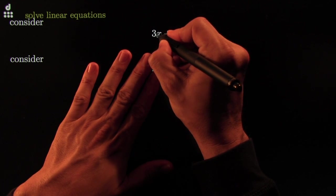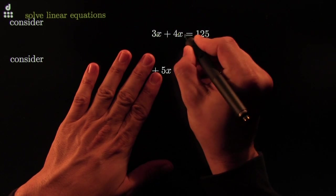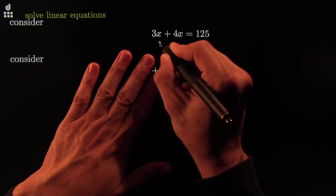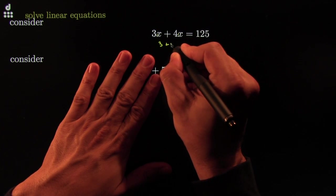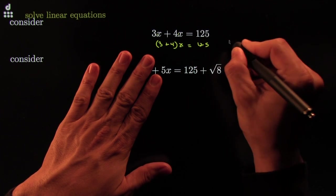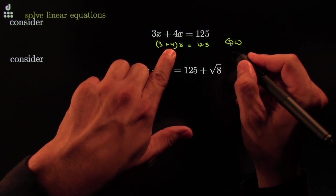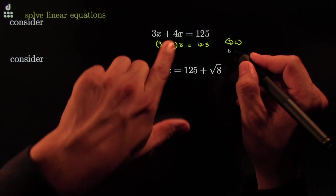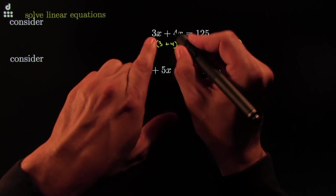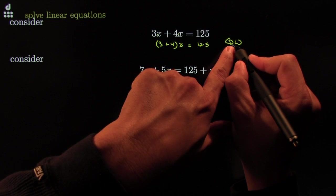You could look at it and say, whoa, it looks like someone distributed an x here. It has x times 4 and x times 3. Basically, what if we were to undistribute it? By the distributive law backwards, this looks like x times the quantity (3 plus 4) equals 125. Now it looks perfect because now you just have one coefficient. This is what they call gathering like terms.